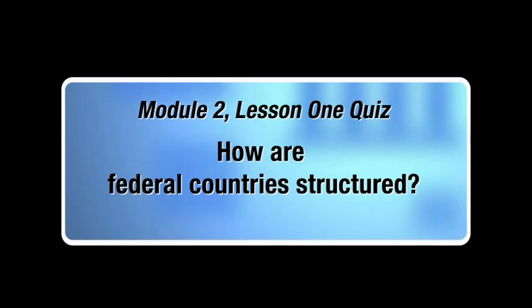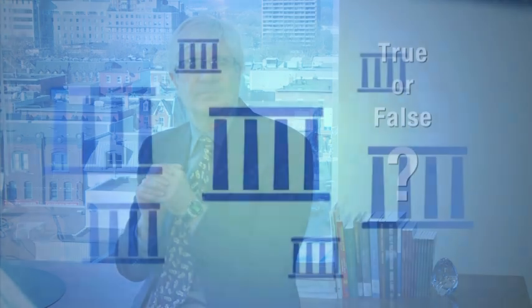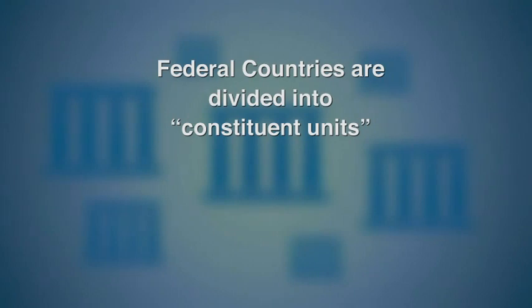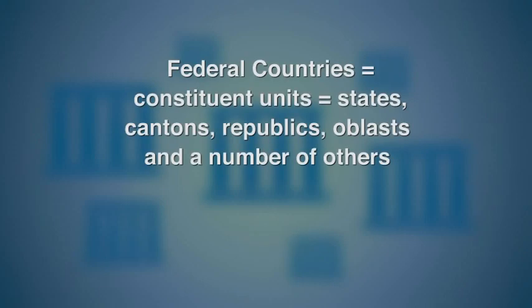Now that we've come to the end of this section, let's summarize what we've learned on how federal countries are structured with a true-or-false exercise. Statement one: Federal countries are divided into constituent units. That is true. Federal countries are divided into units that together constitute the whole country. These constituent units may be called by different names: states, provinces, regions, autonomous communities, territories, cantons, republics, oblasts, and a number of others.